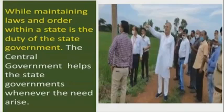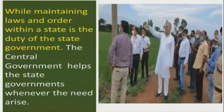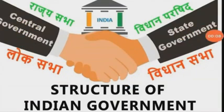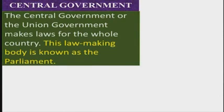The central government helps the state governments whenever the need arises — during floods, droughts, and any natural calamities or disasters. The central government or the union government makes laws for the whole country, and this lawmaking body is known as the parliament.